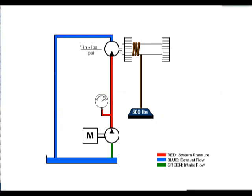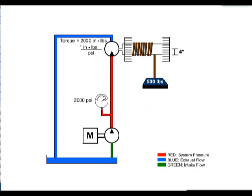A hydraulic motor that is rated at 1 inch-pound force per 1 psi is rotating a winch with a radius of 4 inches. Our load is 500 pounds. The required torque is 2,000 inch-pounds. Based on the torque rating of our motor, our operating pressure would be 2,000 psi. The second consideration would be displacement, which is necessary to determine the amount of flow required to rotate the hydraulic motor at the required RPM.